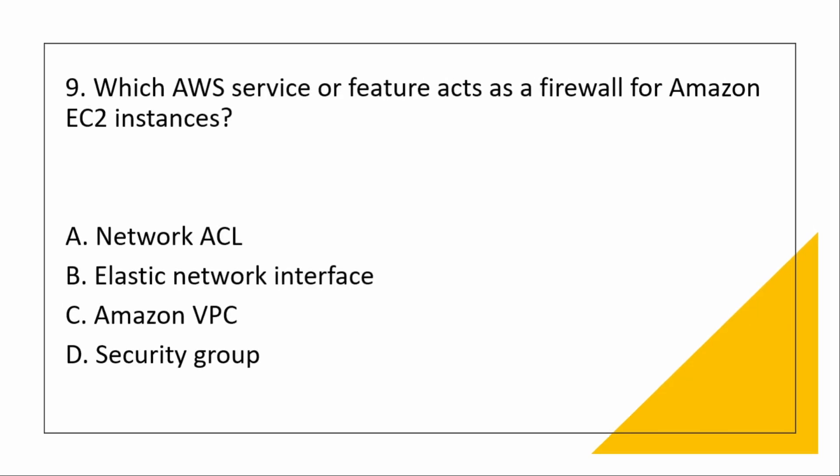Which AWS service or feature acts as a firewall for Amazon EC2 instances? Network ACL acts as a firewall for subnets. ENI is a virtual network card within a VPC through which you can enable network connectivity. Security groups — yes, security groups act as a firewall for EC2 instances. They control the incoming and outgoing traffic. That is the correct answer: security groups.